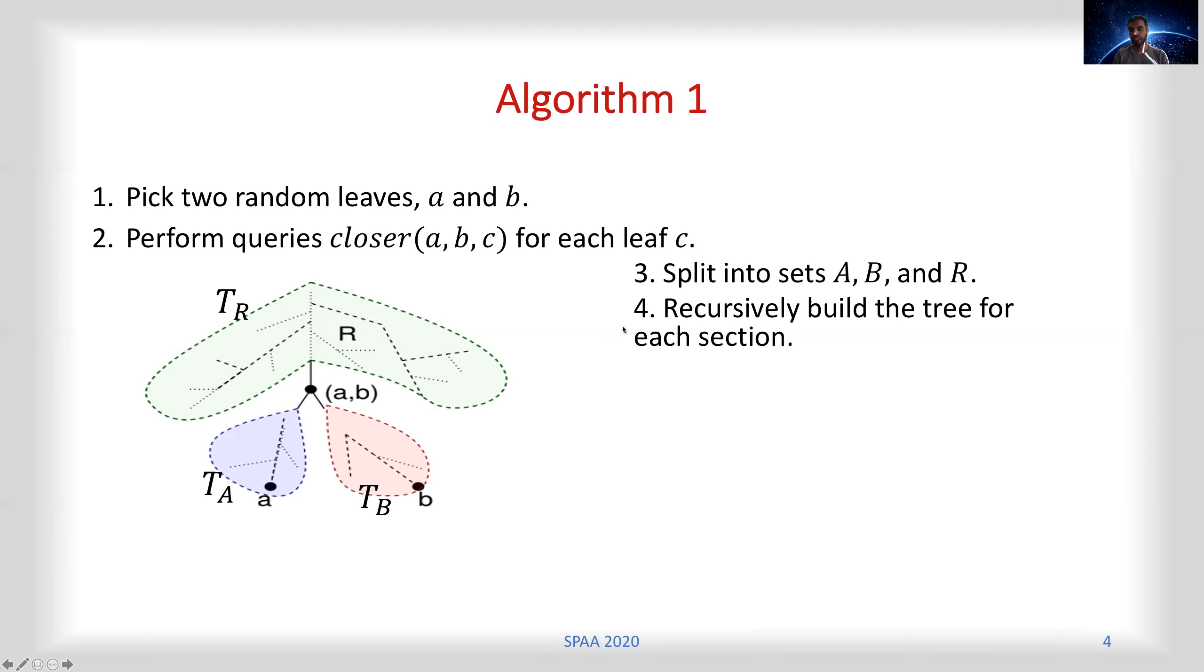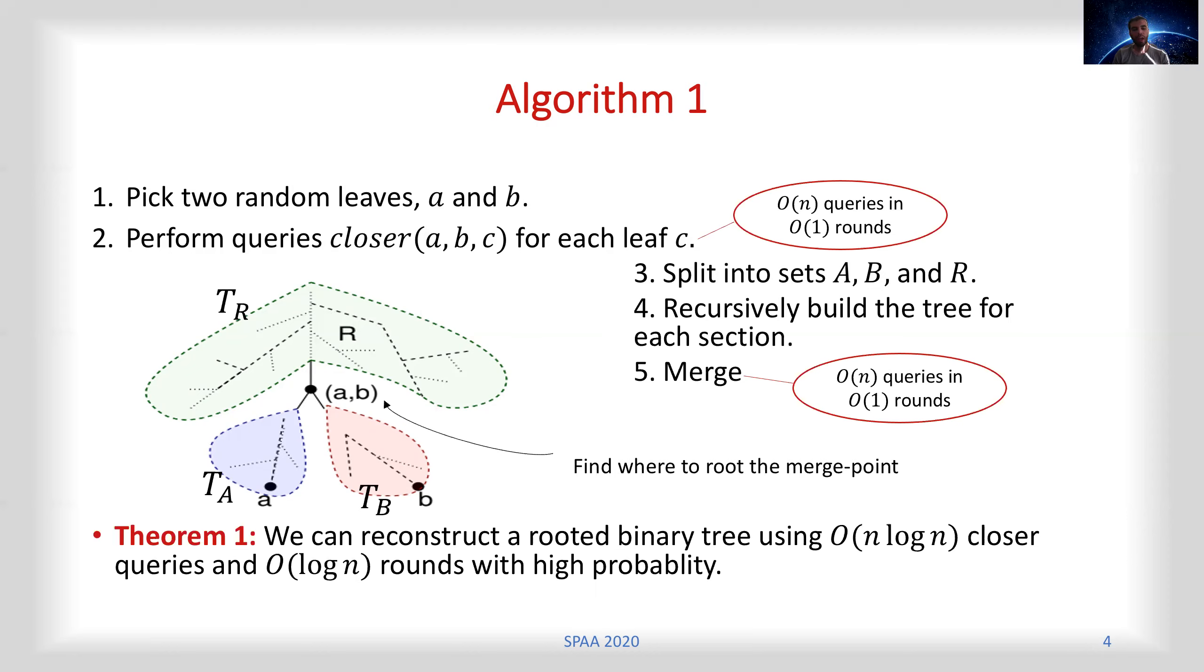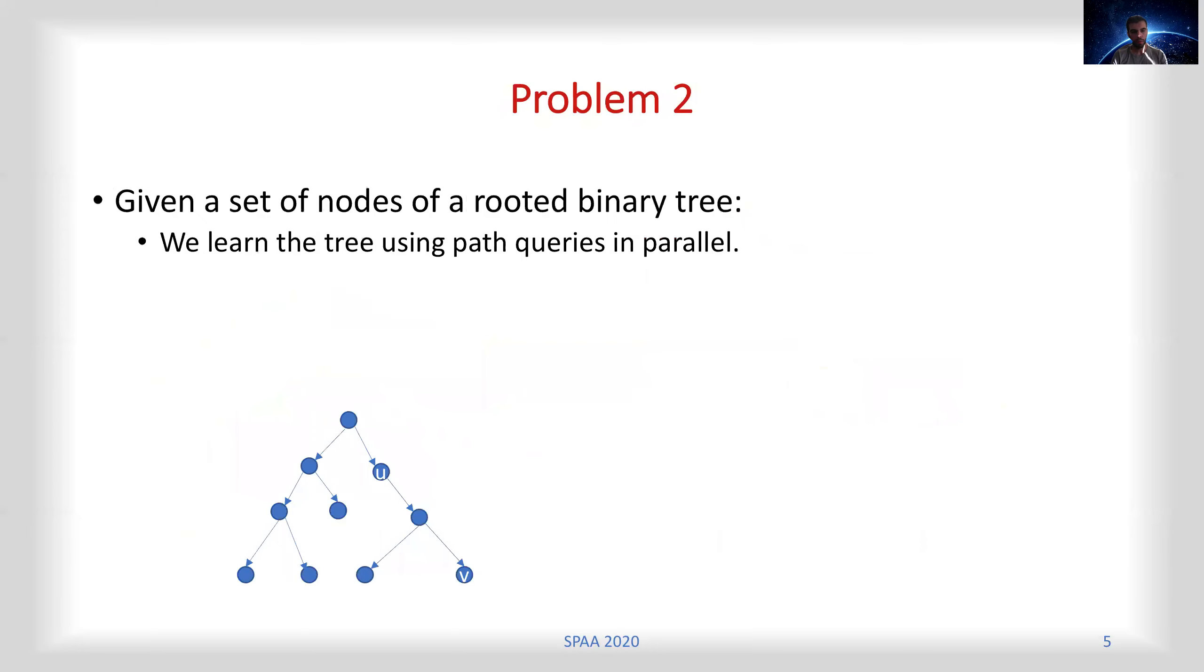We recursively build the tree for each section and then merge those trees with each other. To see more details about this merge function, you can read our paper. It results in a quasi-linear number of queries and O(log n) rounds with high probability.